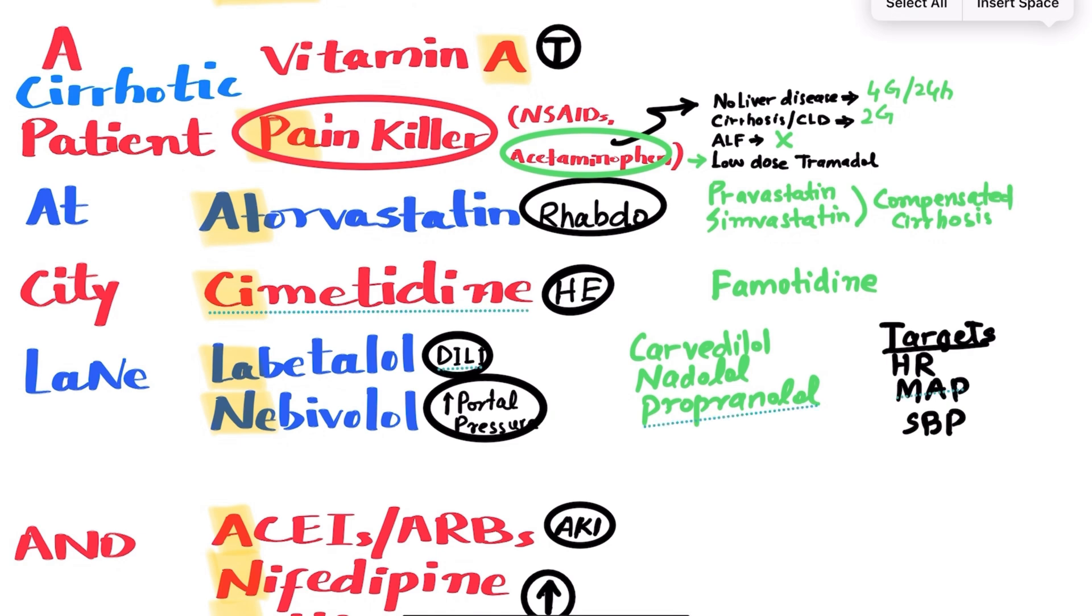So while treating with beta blockers, what should be our targets? Our target should be to bring down the heart rate between 50 and 60, while maintaining the MAP greater than or equal to 82, or systolic blood pressure greater than 90.